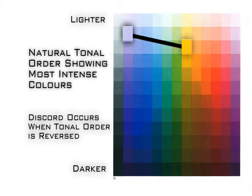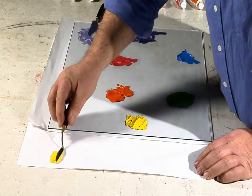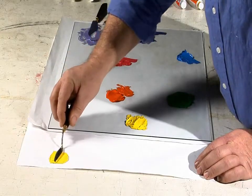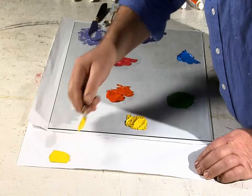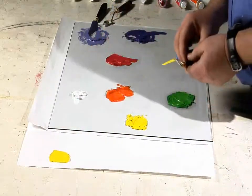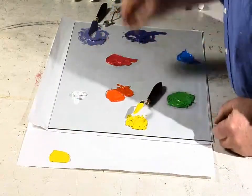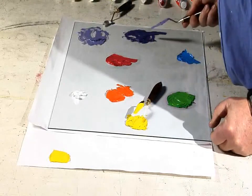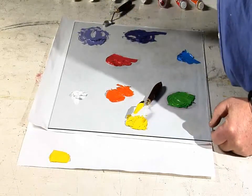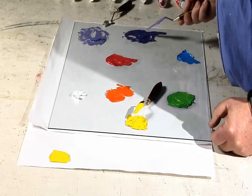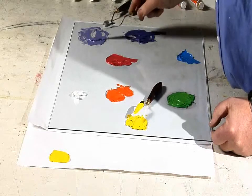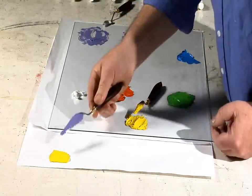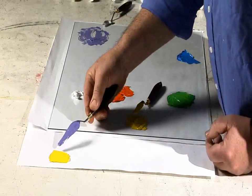You will find it easier to make discords if you first start by taking your naturally lighter color and putting it on the paper so you can compare it with the naturally darker color. Here I've added some white to the naturally darker blue-violet, but as you can see it is still a lot darker than the yellow.